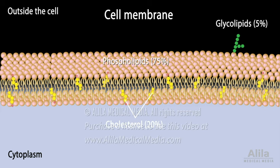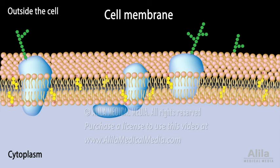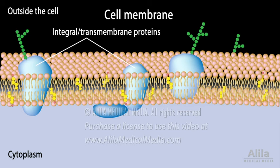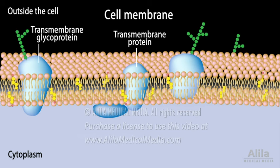The lipid membrane is dotted with membrane proteins, of which there are two types. Integral or transmembrane proteins span across the membrane, some passing through multiple times. Some transmembrane proteins have a small carbohydrate chain on the outside of the cell. Peripheral proteins attach to the membrane on the inside, and a peripheral protein typically functions together with an integral protein.